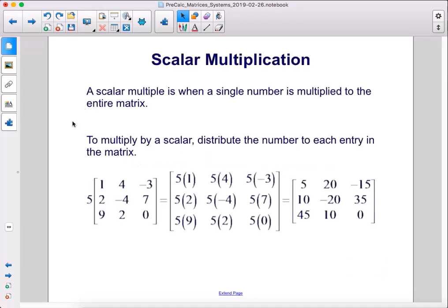Scalar multiplication. A scalar multiple is when a single number is multiplied to the entire matrix. To multiply by a scalar, distribute the number to each entry in the matrix.